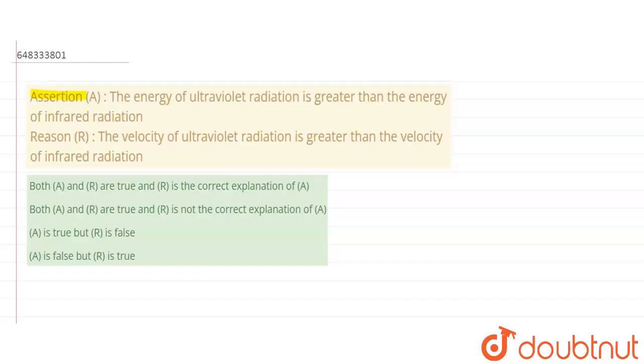Hello everyone, so here we have the question. The question says that here is an assertion and a reason given. The assertion is the energy of ultraviolet radiation is greater than the energy of infrared radiation, and the reason is the velocity of ultraviolet radiation is greater than the velocity of the infrared radiation.